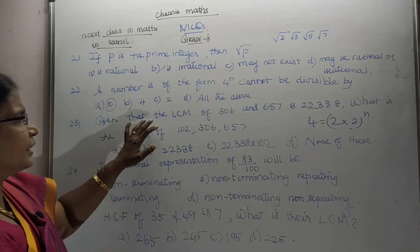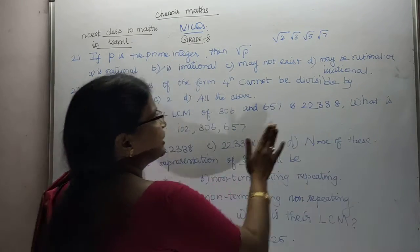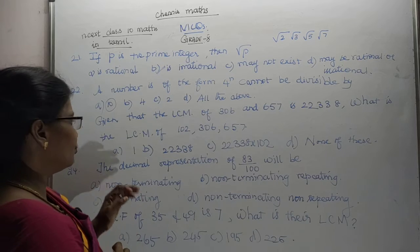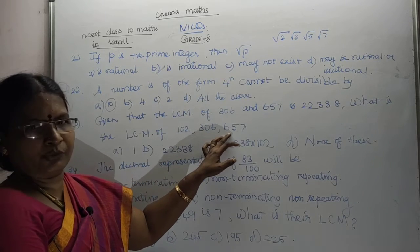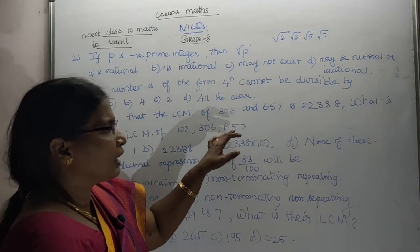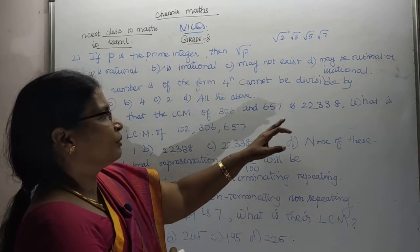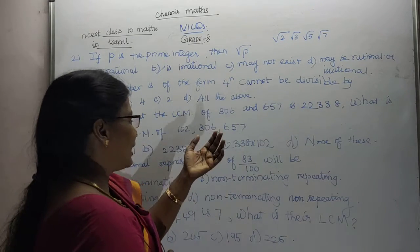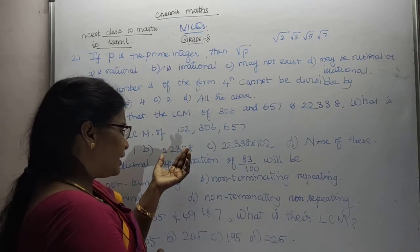Question 23: Given that LCM of 306 and 657 is 22338. What is the LCM of 102, 306, 657? You can see that with 306 and 657, you can get LCM. Then, the LCM is here. Where is the LCM?